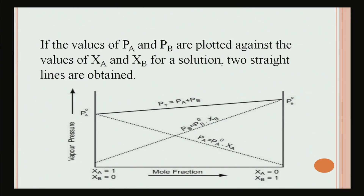If the values of P_A and P_B are plotted against the values of X_A and X_B for the solution, two straight lines are obtained, as you can see. This graph represents the ideal solution.